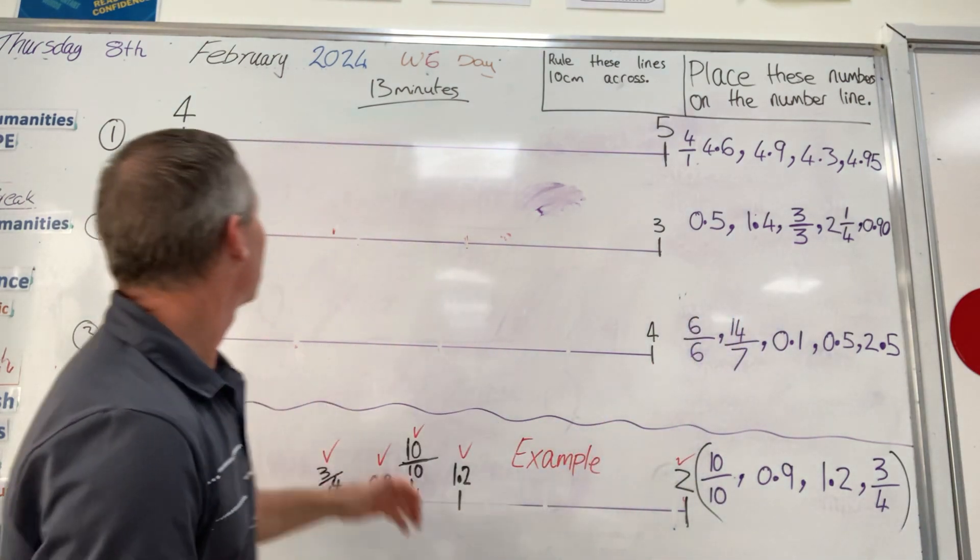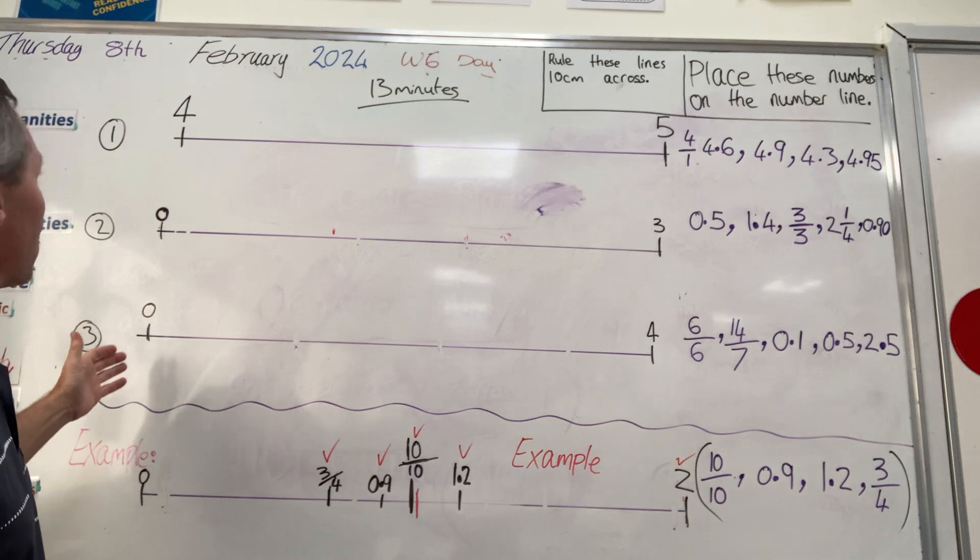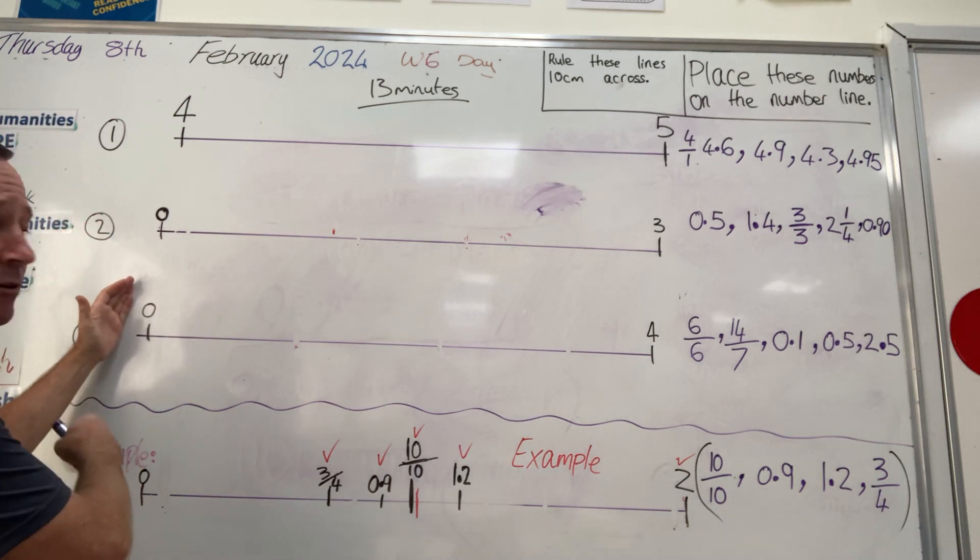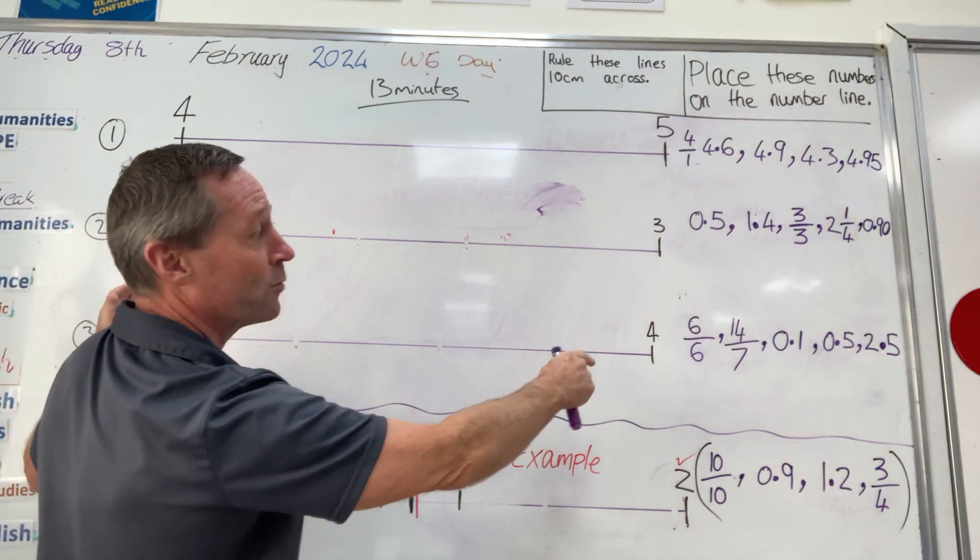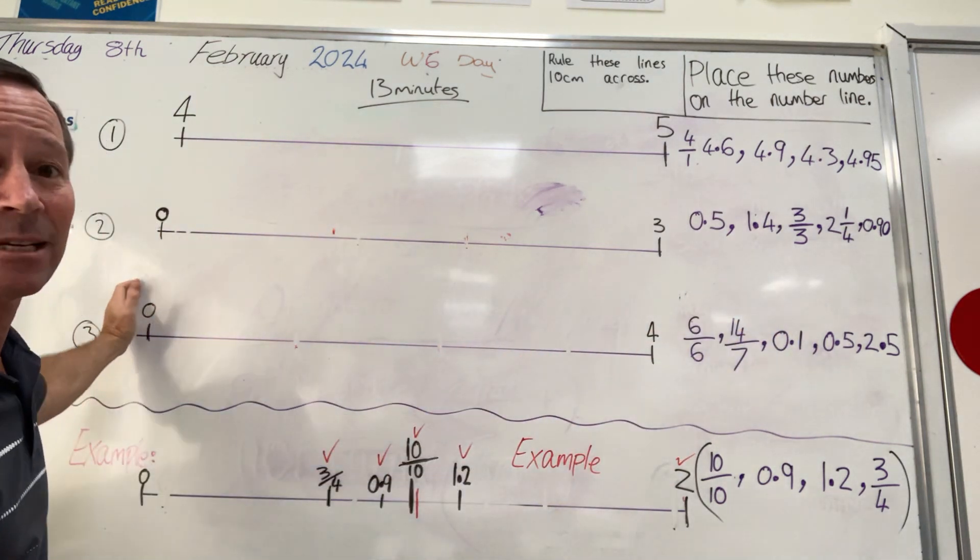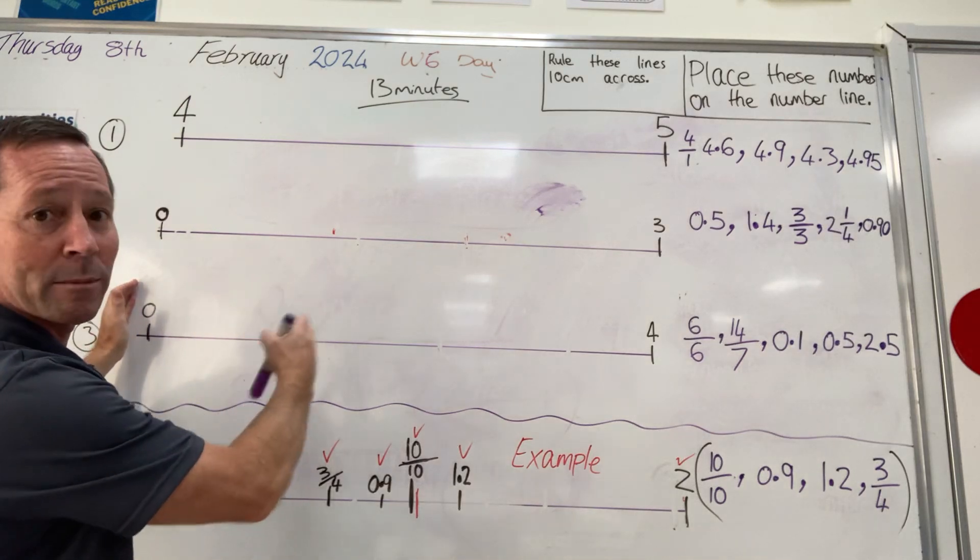So for example, on this number line here, it says 0 to 4. Before I place any of these numbers onto this number line, I'd actually place the whole numbers on here first.